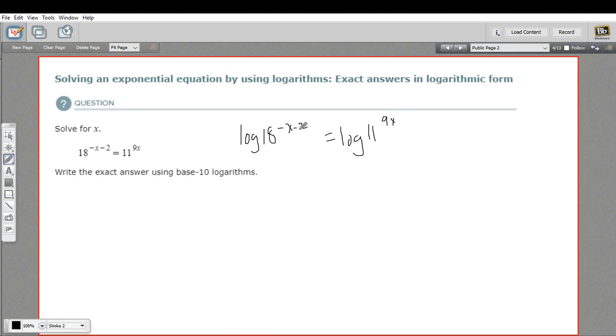The next step, we use the properties of logs to take this exponent and multiply it out front. So this exponent property allows us to do that. That gives us negative x minus 2 times the log of 18. Already, this is looking better. We've got our variable out of the exponent. And this side, we get 9x times the log of 11.